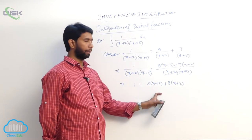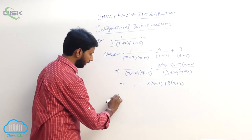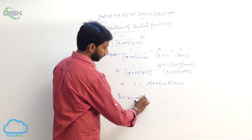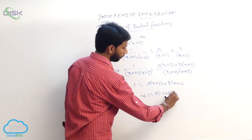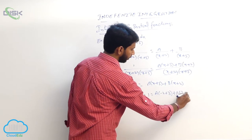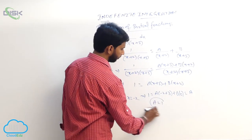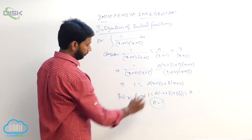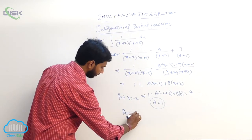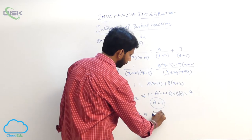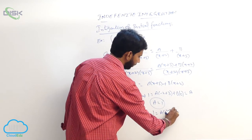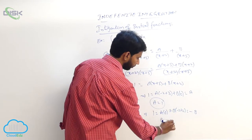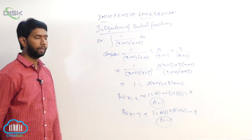To find A, substitute x = -2: 1 equals A(1) + B(0), so A equals 1. To find B, substitute x = -3: 1 equals A(0) + B(-1), so B equals minus 1.